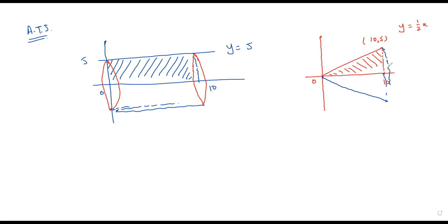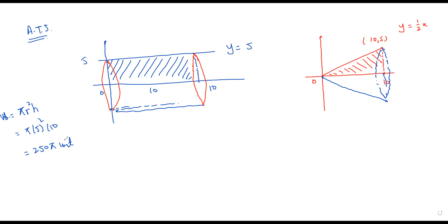We have formulas for these solids. I'll find the volume using standard formulas first, then show how to get the same result through integration. The volume of a cylinder is πr²h. Here the radius is 5 and height is 10, giving 250π cubic units.